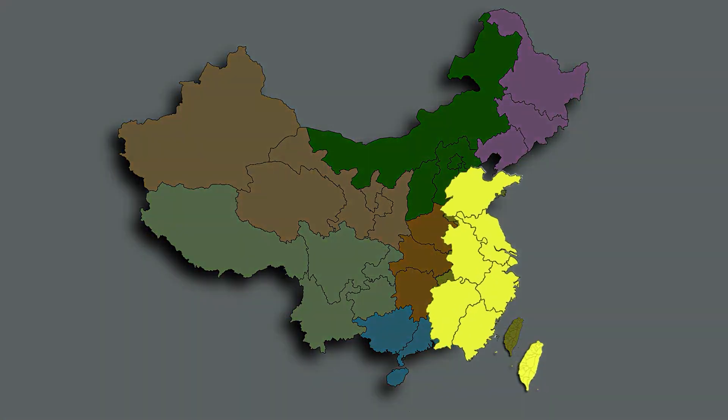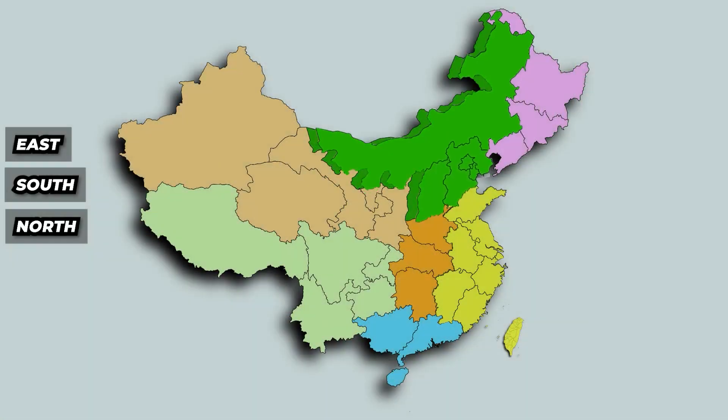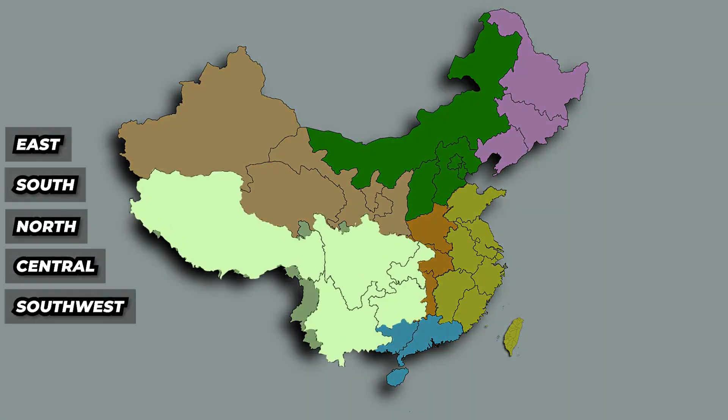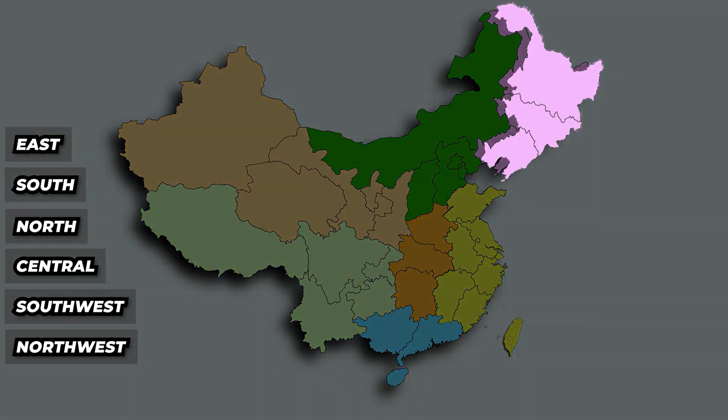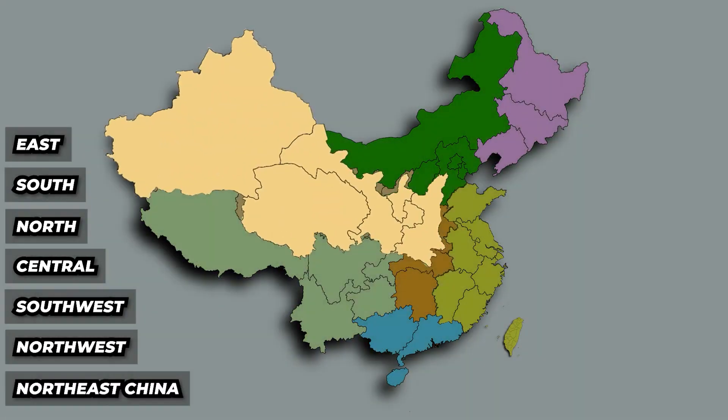Now, China is divided into seven major geographic regions: East, South, North, Central, Southwest, Northwest, and Northeast China. We'll now go through each of these regions.